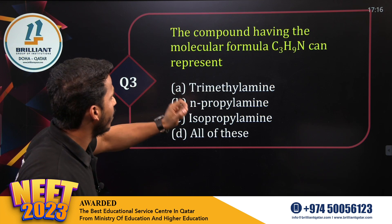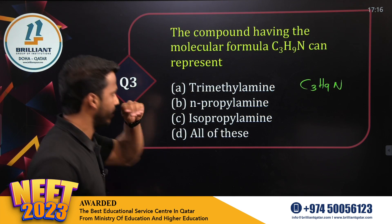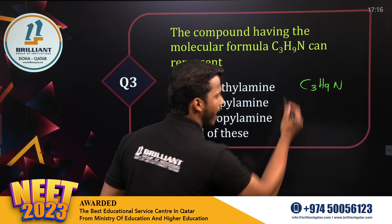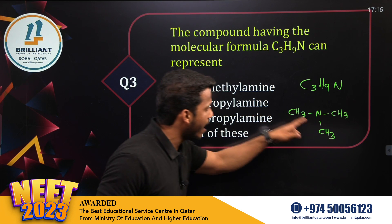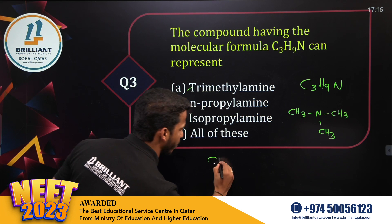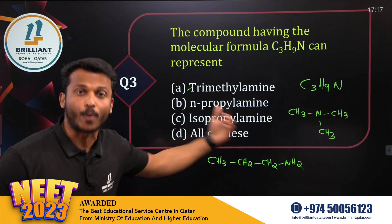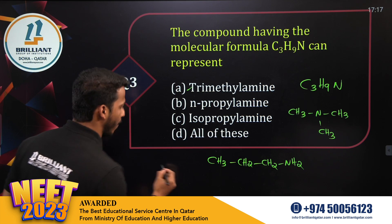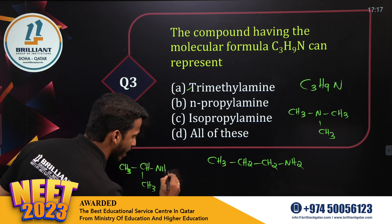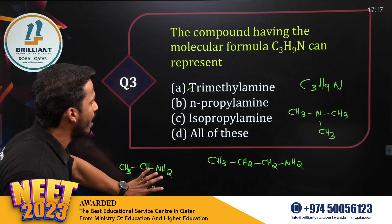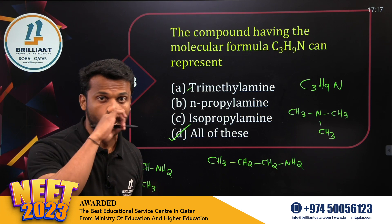Let's go to question number three. The compound with molecular formula C₃H₉N can represent which types of amines? It can be trimethylamine — CH₃–N(CH₃)–CH₃ — a tertiary amine. It can also be n-propylamine: CH₃–CH₂–CH₂–NH₂, a primary amine with a matching formula. It can also be isopropylamine, where the isopropyl group carries one amine group. So C₃H₉N can represent all of these. Option D: all of these, so be very careful.